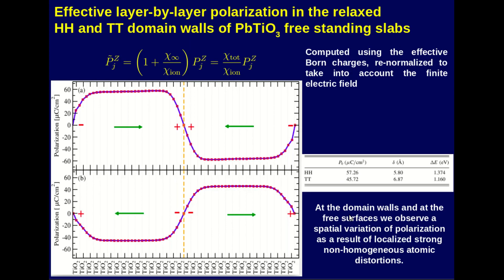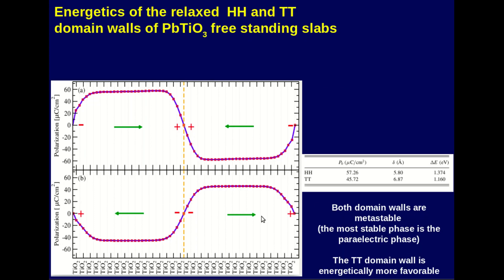Our results show an almost flat polarization profile at the interior: 57.26 microcoulombs per square centimeter for the head-to-head and 45.72 microcoulombs per square centimeter for the tail-to-tail. At the domain walls and surfaces there is a variation in polarization, which is a signature of localized, strong, inhomogeneous atomic distortions. Regarding energetics, both the tail-to-tail and head-to-head polar configurations are metastable relative to the paraelectric phase. Of the two, the tail-to-tail is the most stable, with an energy difference from the paraelectric of 1.16 versus 1.374 for the head-to-head — though both values are very small and competing.